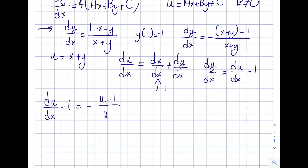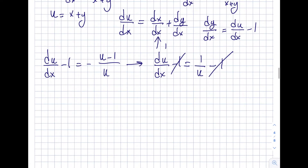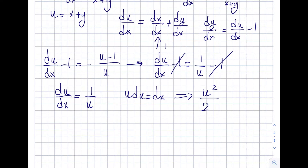Simplifying: du/dx minus 1 equals negative u/u plus 1/u, which is negative 1 plus 1/u. The minus ones cancel, leaving du/dx equals 1/u. Separating variables gives u du equals dx. Integrating both sides: u²/2 equals x plus C.